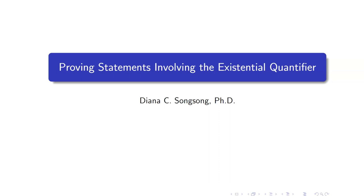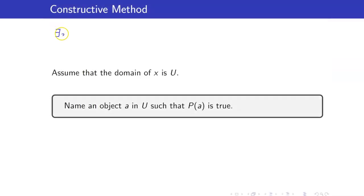In our last video lecture, we talked about proving statements involving the universal quantifier. In this lesson, we are going to discuss proofs of statements involving the existential quantifier. In order to prove a statement of this form — there exists x such that t of x — there are two methods that we can use. The first one is the constructive method. For the constructive method, we name a particular object in our domain such that it satisfies the open sentence. That is, we name an object a in u such that t of a is true.